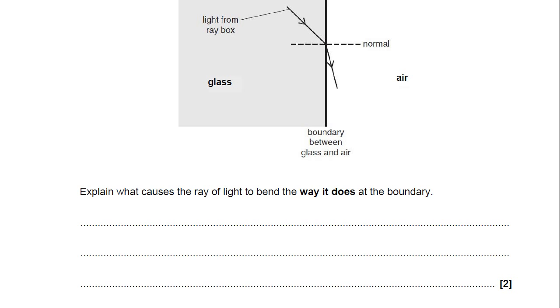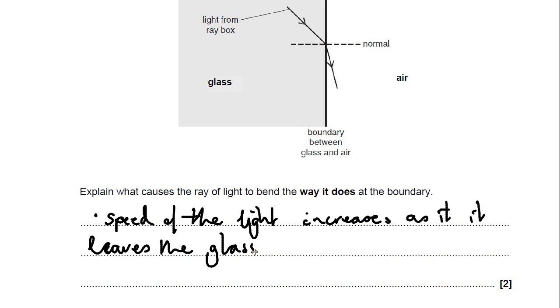Well, it's actually about the relative speed. So I'm going to quickly just give you a written answer. The speed of the light increases as it leaves the glass. And because of that, it refracts away from the normal. So it bends away from the normal.